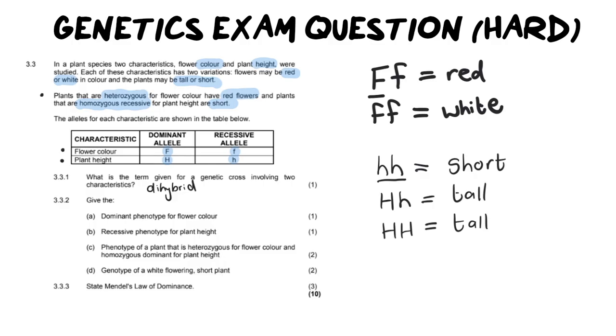For 3.3.2, it says, give the dominant phenotype for the flower color. The dominant phenotype for the flower color, we've just actually worked out earlier, which is going to be red. And that's why you need to do this little calculation on the side of your page to figure out what color is dominant and what height is dominant.